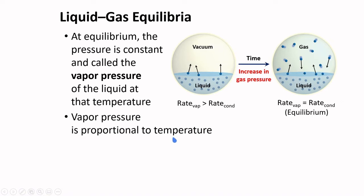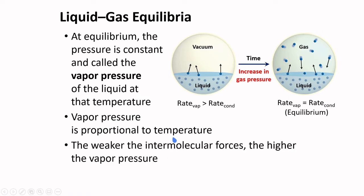The higher the temperature, the greater the gas pressure or the vapor pressure. The weaker the intermolecular forces of the substance, the higher the vapor pressure.